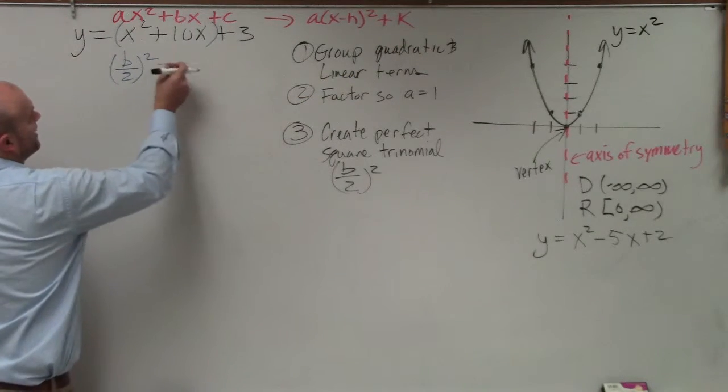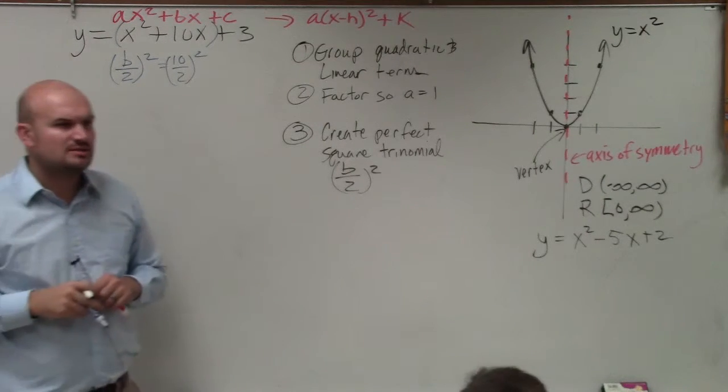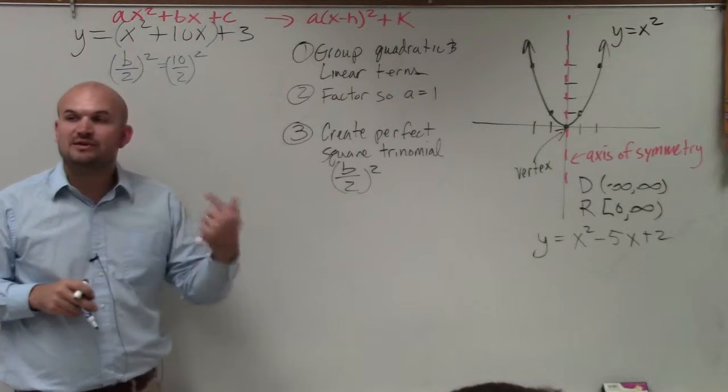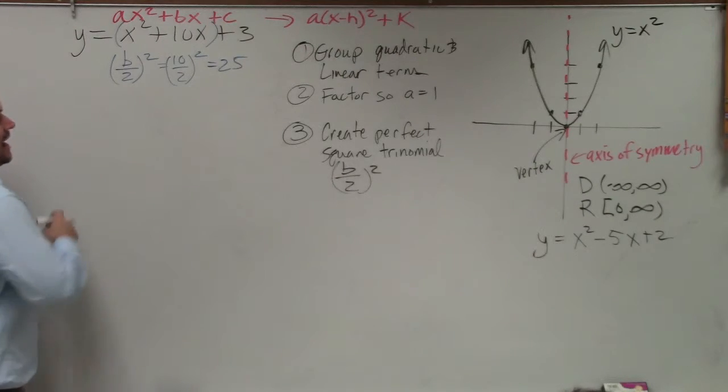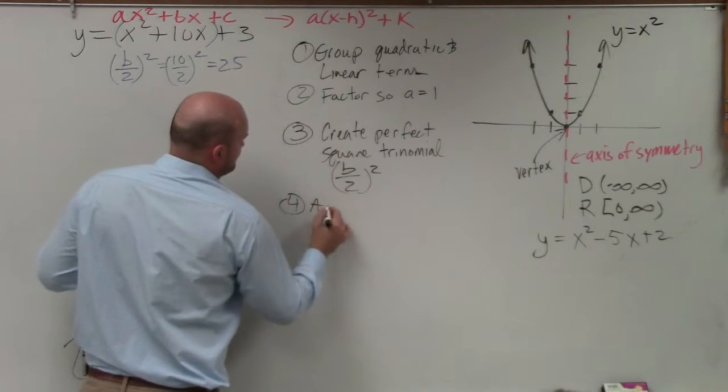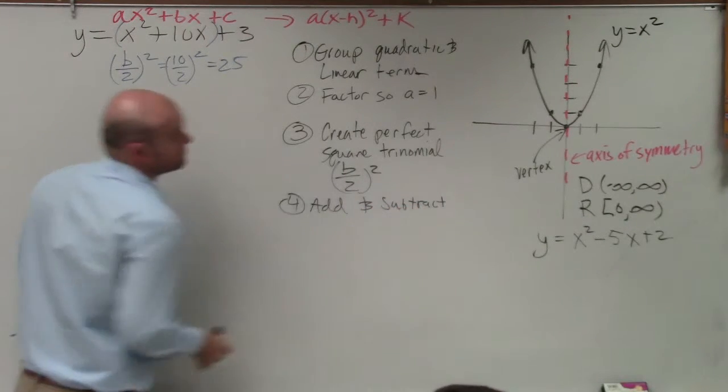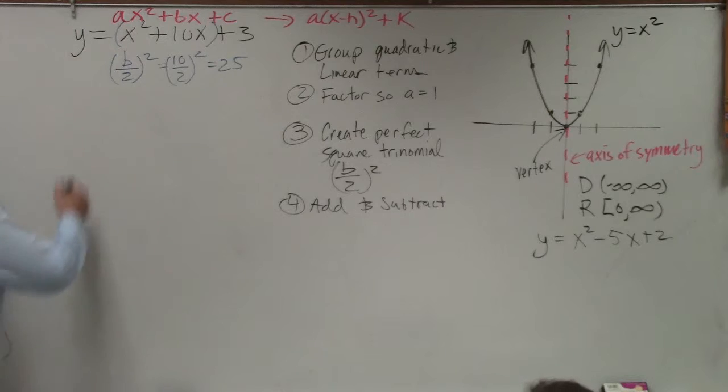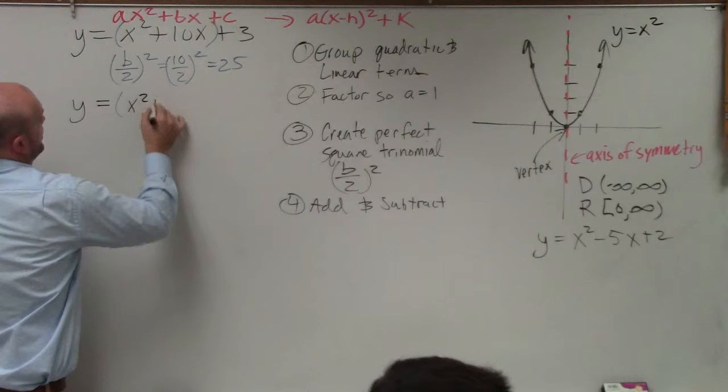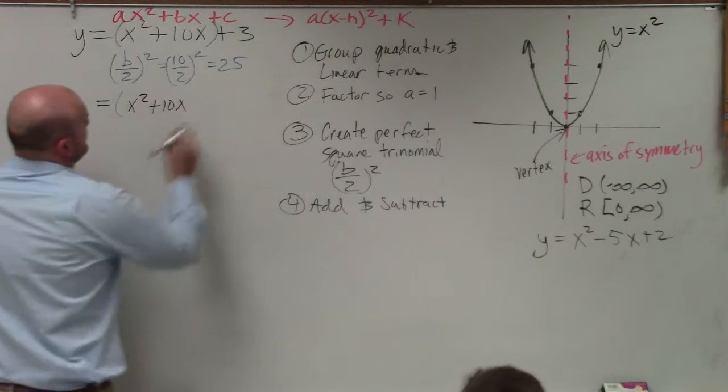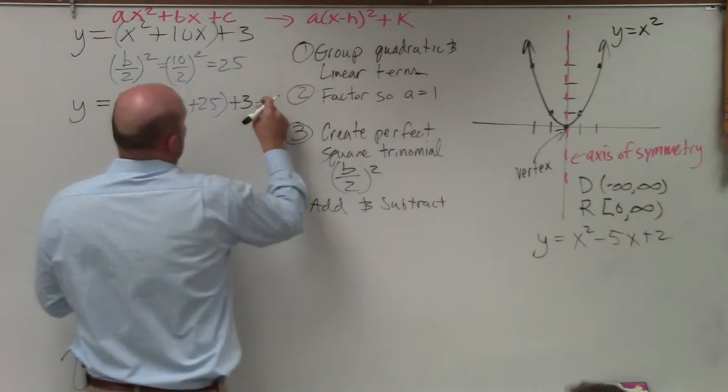So now, I have 10 divided by 2 and square it. Please follow the order of operations. 10 divided by 2 is 5. 5 squared is 25. Now, I add and subtract. So I'm going to have y equals x squared plus 10x plus 25 plus 3 minus 25.